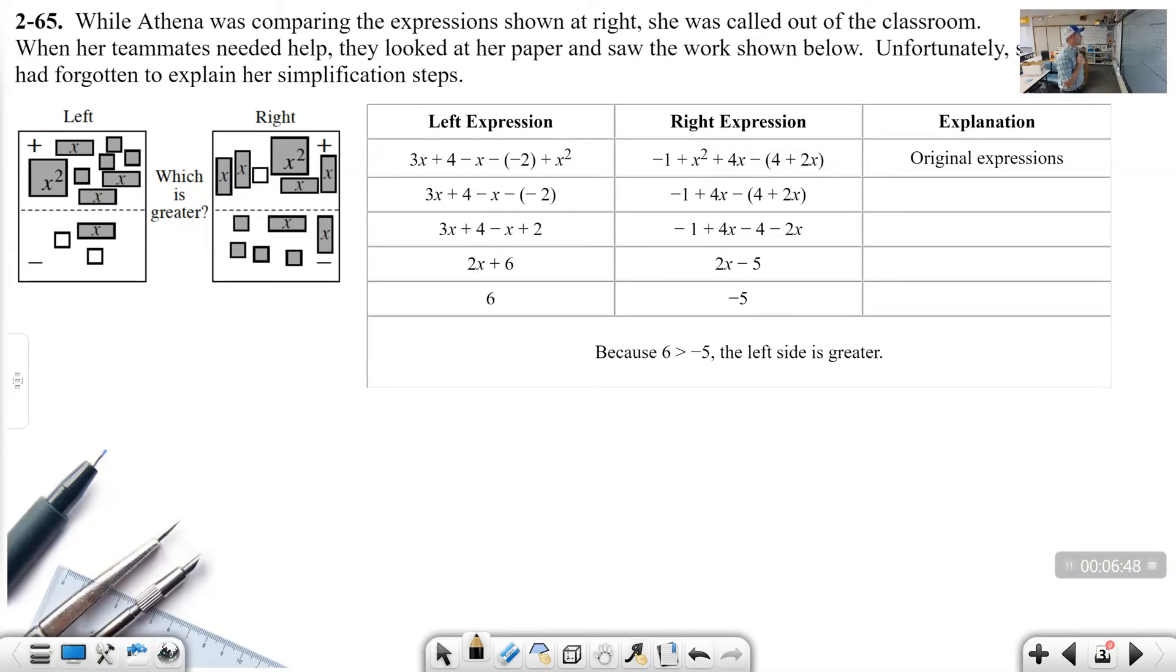So here we go. Problem 265. While Athena was comparing the expressions shown at right, she was called out of the classroom. When her teammates needed help, they looked at her paper and saw the work shown below. Unfortunately, she had forgotten to explain her simplification steps. So here we go. You have to name the legal move. I'm going to help you see it, but you have to know the legal move. Flip, balance, zero pair. A flip is when we take stuff out of the negative region.